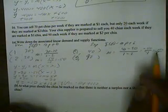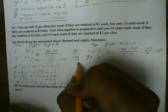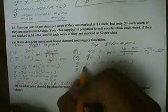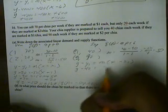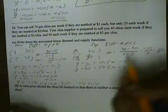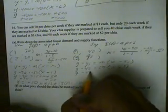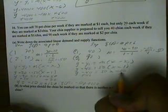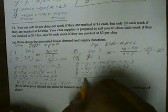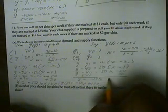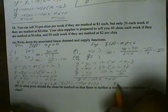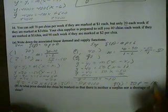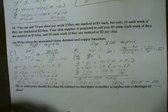We have Y minus Y1 equals M, X minus X1, the point slope formula. And the opposite of Y is going to be negative 40. This is going to be 50 for M, and negative 1 for X. When I distribute my 50, we'll get 50X minus 50. Add 40 to both sides. And we end up with Y equals 50X minus 10, which means that this will be Q of P equals 50P minus 10. And this is going to be our supply function.